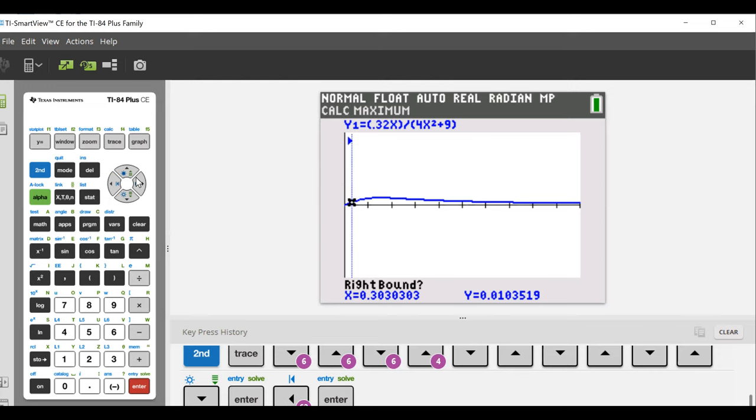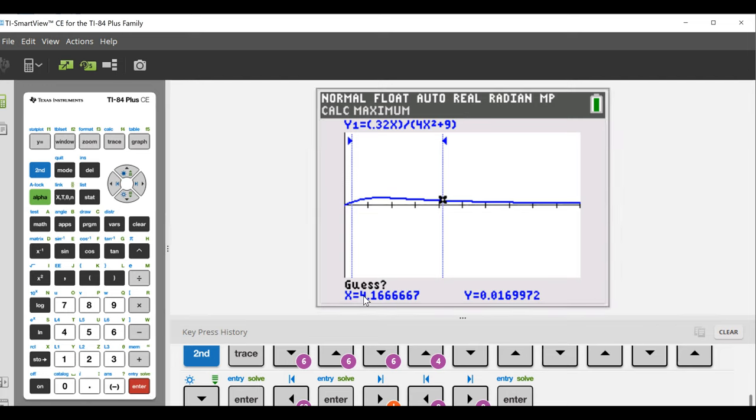And now, just like I promised, your calculator is asking for a value to the right of this maximum. We scroll around using the arrow keys. Once we're to the right of the maximum, we press enter.